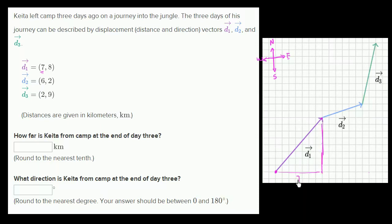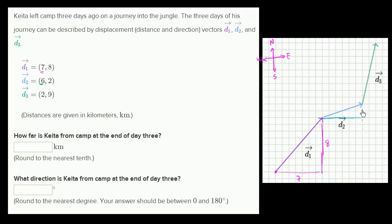Day one: seven east and eight north. Then on day two, he went six kilometers to the east and two kilometers to the north. So he ends up right over here: six and two.